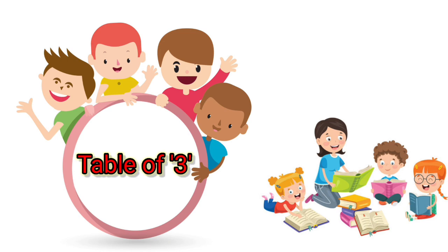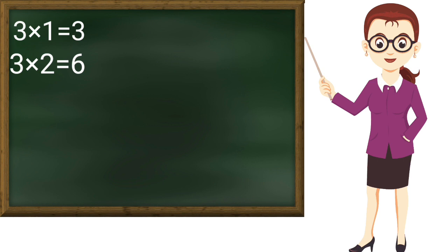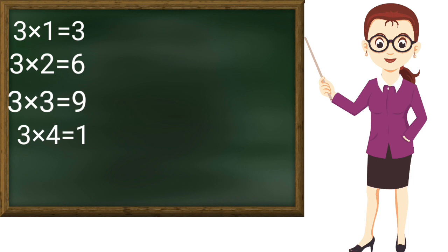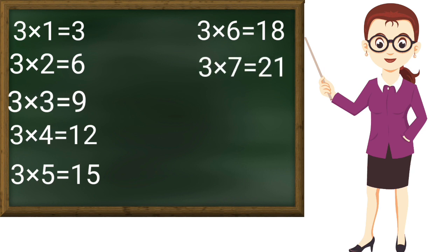Now table of 3: 3 ones are 3, 3 twos are 6, 3 threes are 9, 3 fours are 12, 3 fives are 15, 3 sixes are 18, 3 sevens are 21.